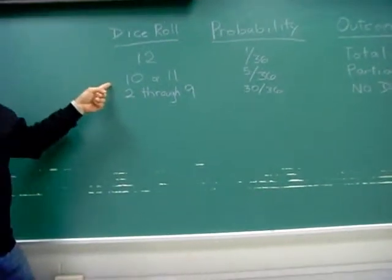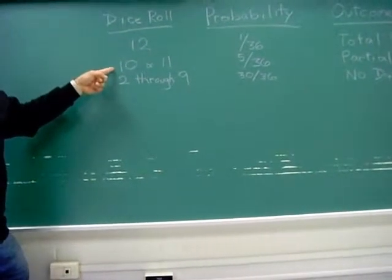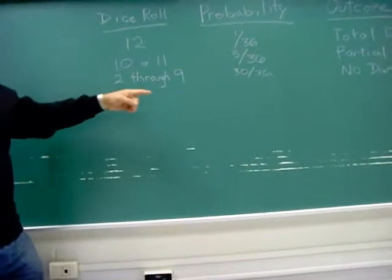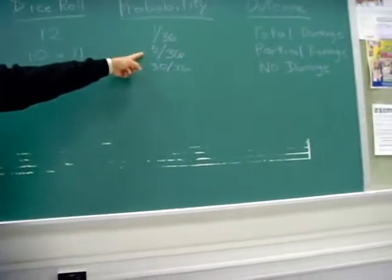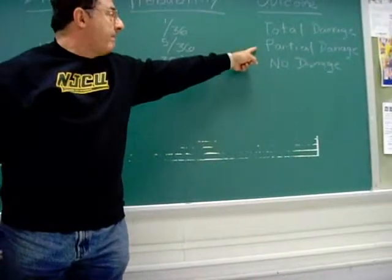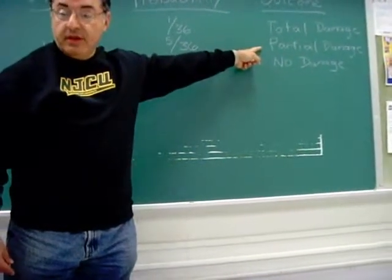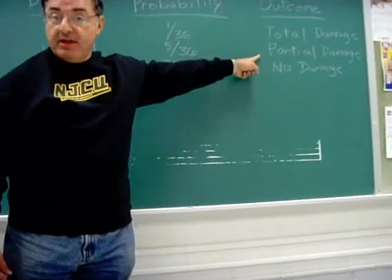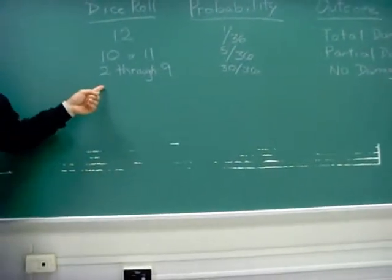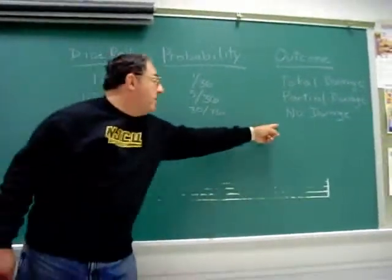If you roll a ten or an eleven, and a ten you can roll a number of different ways, such as a five and five, or a six and four, or an eleven, the chance is quite a bit bigger rolling a ten or eleven. And then you have partial damage. And we're going to say partial damage is fifty dollars. So, if you didn't buy the insurance, you would have to pay the fifty dollars to repair your house. If you roll anything else, which has a very strong probability, then you have no damage.